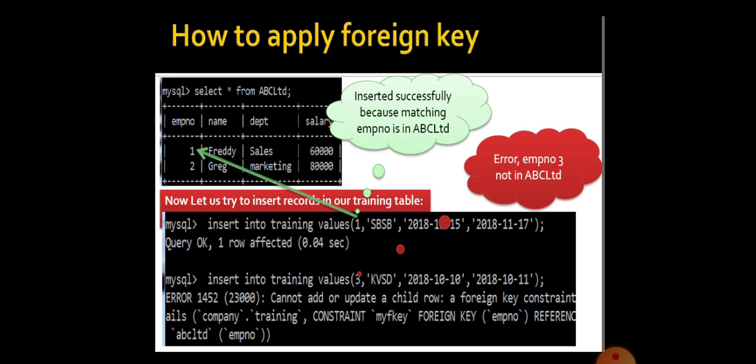Here the child table is training, because we are referencing the value from the master table called ABC Limited. From which we are taking the primary key, that is called a master table to where we are copying or referencing the primary key value. The table which is having a foreign key is termed to be child table.